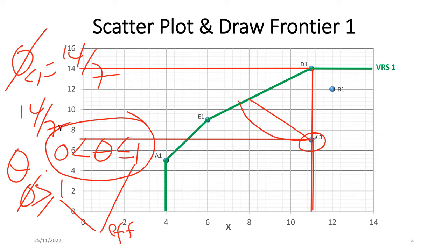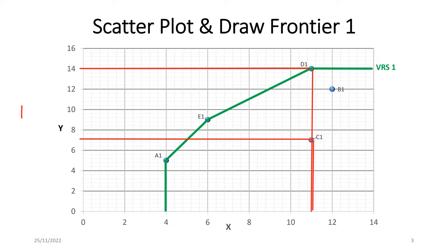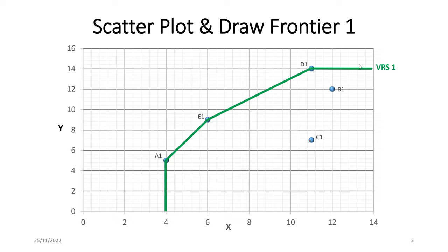Now you know how to estimate efficiency scores for each data point. Firm A1 is firm A in year one; B1 is firm B in year one. What if the same firms move to year two? The same firm A, which previously used 4 inputs to produce 5 outputs, is now using 8 to produce 6. That gives us another frontier.